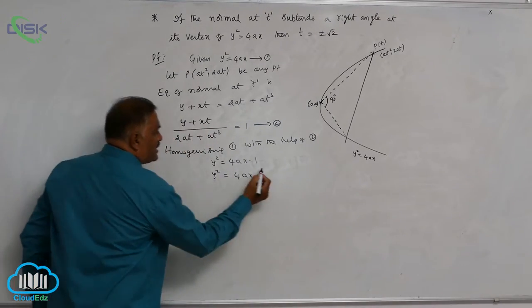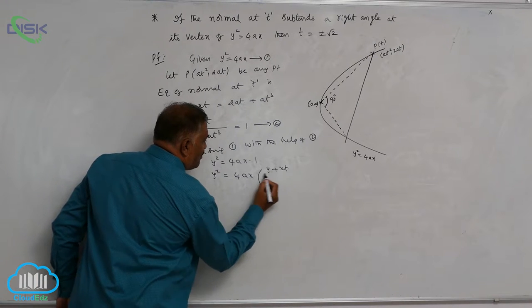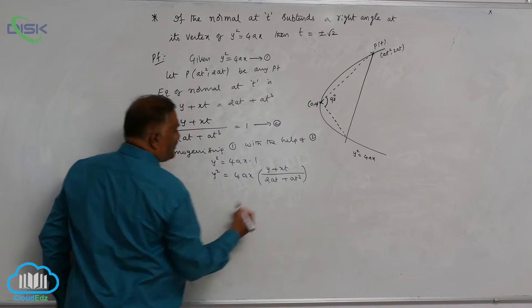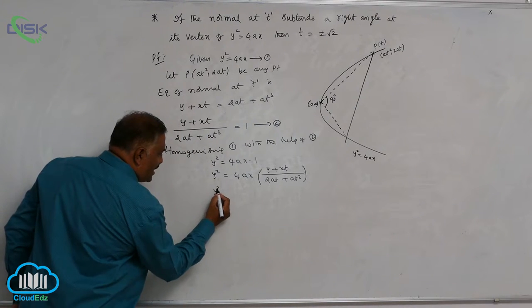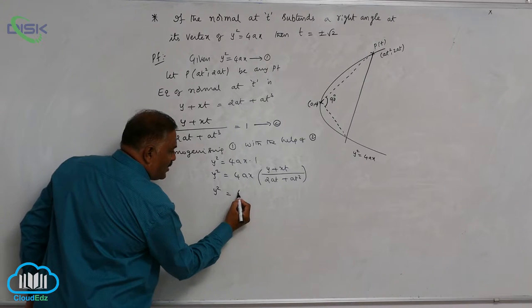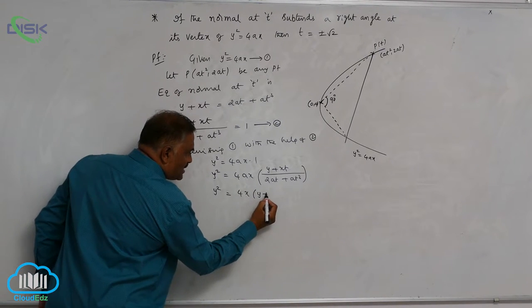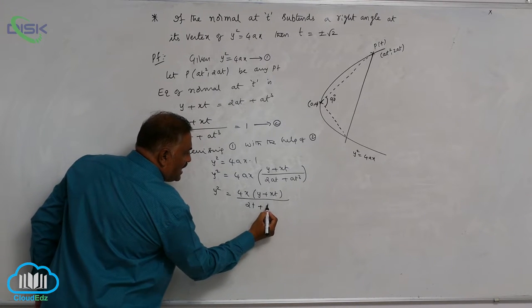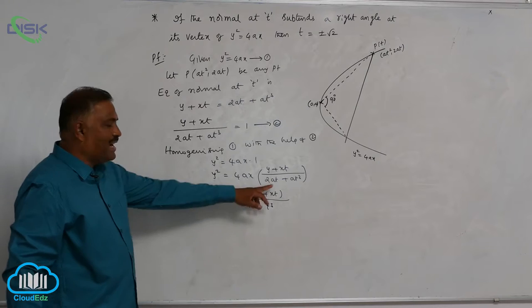y square equal to 4ax into, in place of 1, we will write y plus xt divided by 2at plus at cubed. Again, y square equal to, you can remove a as a gets cancelled, 4x into y plus xt divided by 2t plus t cubed.